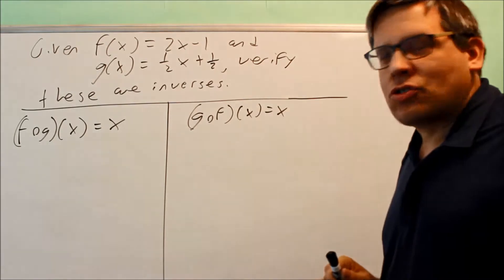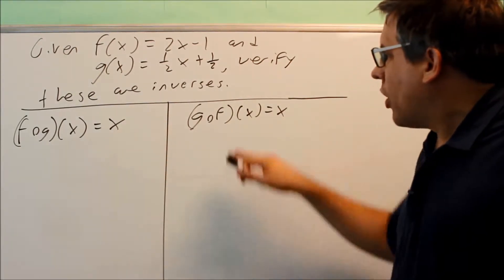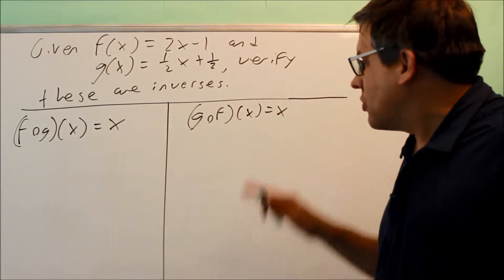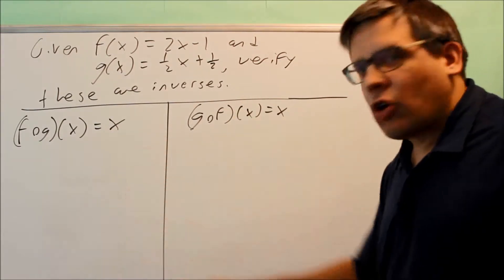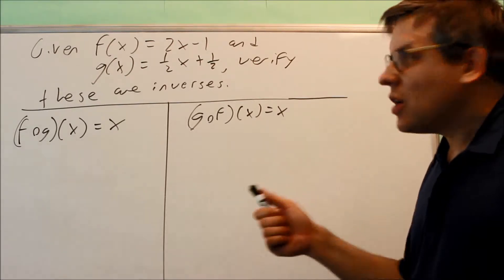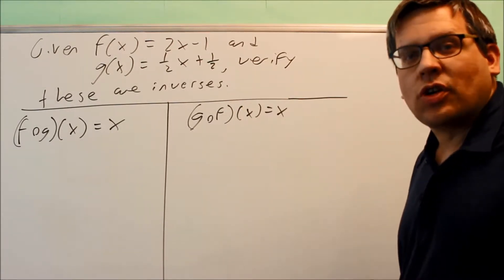We're going to do f of g of x and show that's equal to x. We also have to do g of f of x and show that's equal to x as well. So we have to work out both sides and show that both sides equal x, and that's our verification to show these are inverses.